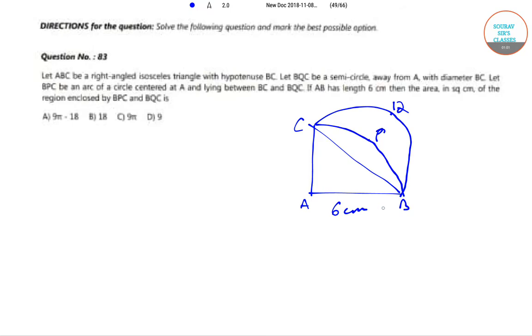then the area in square cm of the region enclosed by BPC and BQC is. Now let AB is equal to A, so A is equal to 6 cm.